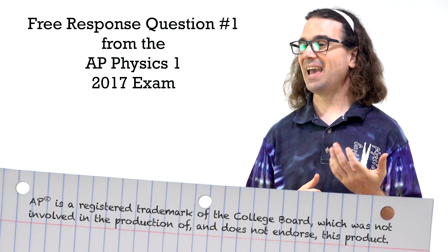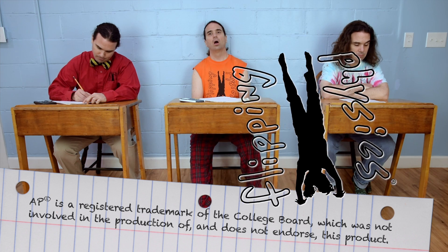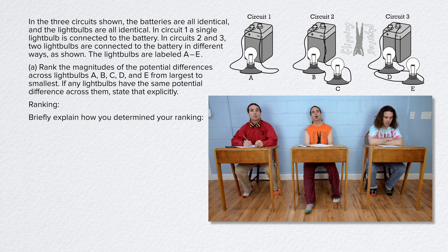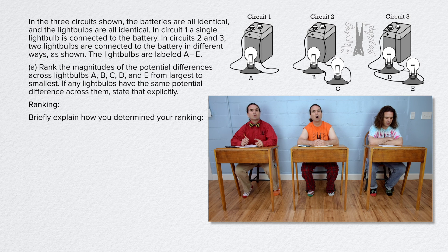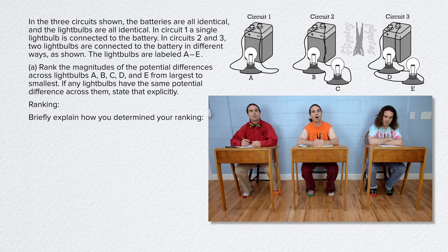Please read the problem through part A. In the three circuits shown, the batteries are all identical and the light bulbs are all identical. In circuit 1, a single light bulb is connected to the battery. In circuits 2 and 3, two light bulbs are connected to the battery in different ways as shown. The light bulbs are labeled A through E. Part A: rank the magnitudes of the potential differences across light bulbs A, B, C, D, and E from largest to smallest. If any light bulbs have the same potential difference across them, state that explicitly.